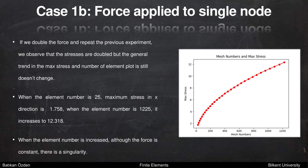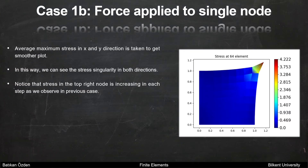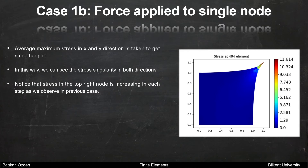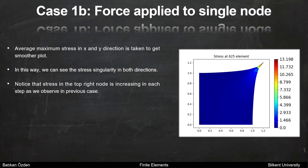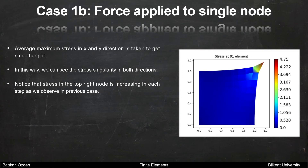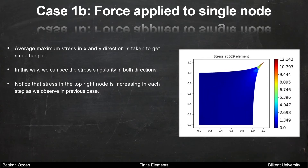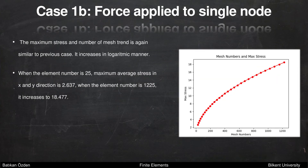When the element number is increased, although the force is constant, there is a singularity. If we plot the structure using average maximum stress in x and y direction, we get smoother plots and can see the stress singularity in both directions. The stress in the top right node is increasing at each step. The maximum stress versus mesh number trend is again logarithmic. When the element number is 25, the maximum average stress in x and y direction is 2.6. When the element number is 1225, it increases to 18.4.